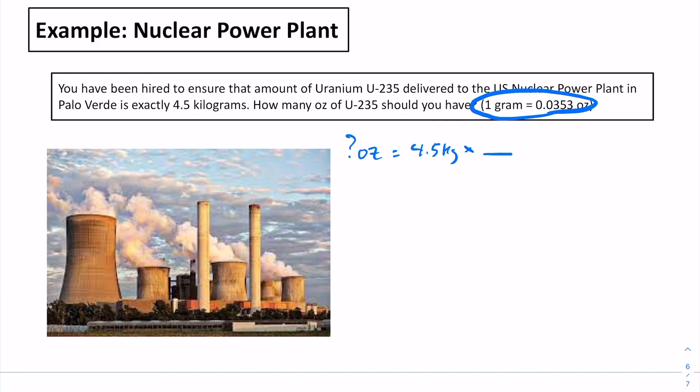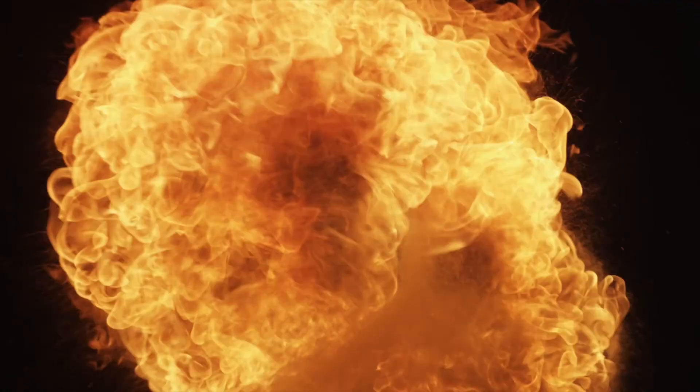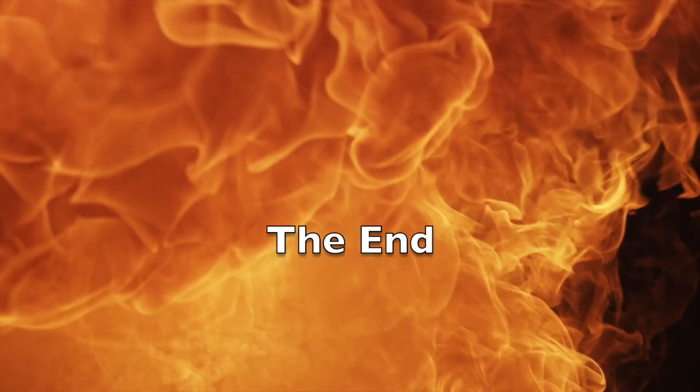Working through the conversion: we start with 4.5 kilograms and need to convert to grams first. The speaker notes an initial error — 1 kilogram is 1,000 grams, not 100 grams — and corrects the approach before continuing with the dimensional analysis.